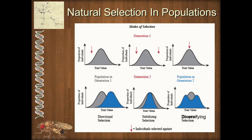We call this directional selection. The key to directional selection is it can go either way. One of the famous examples is Darwin's finches, where there was a drought and finches got larger because only larger seeds were available as food. But if smaller seeds become available, it could shift the other way. So directional selection goes either way depending on which side of the distribution does well and which side does poorly.